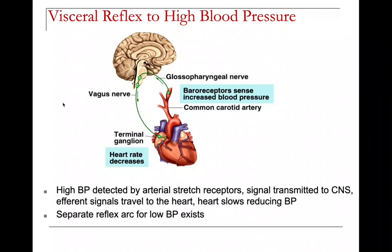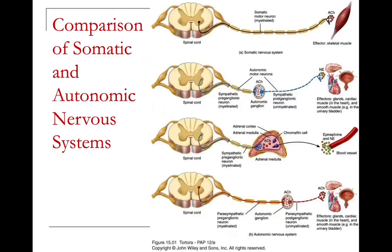A visceral reflex controls high blood pressure. The vagus nerve goes to the terminal ganglion and decreases heart rate. Baroreceptors sense an increase in blood pressure and send feedback to the brain through the glossopharyngeal nerve. High blood pressure is detected by arterial stretch receptors, the signal is sent to the CNS, and the efferent signal travels to the heart to slow things down and reduce blood pressure.